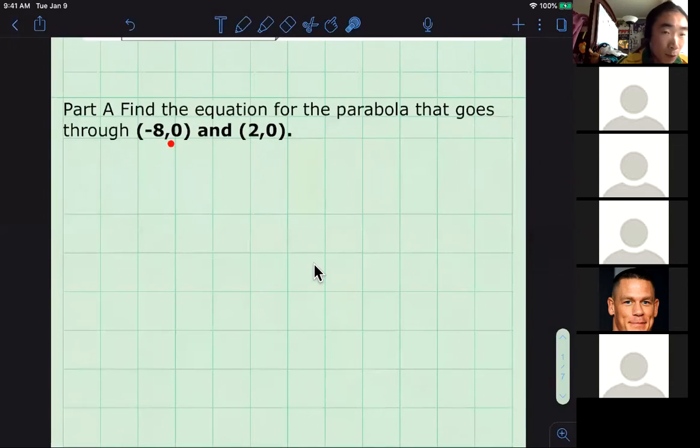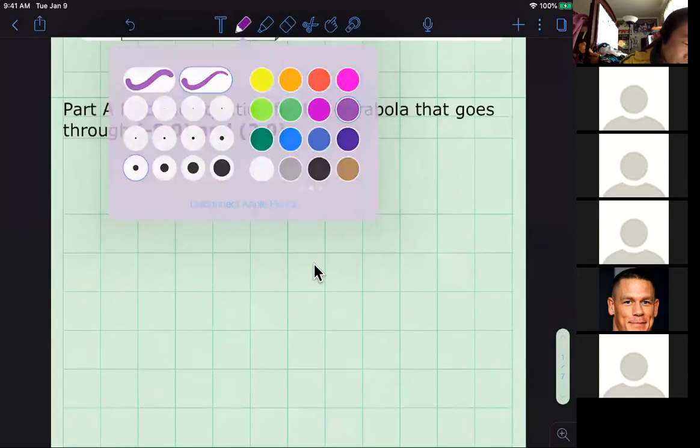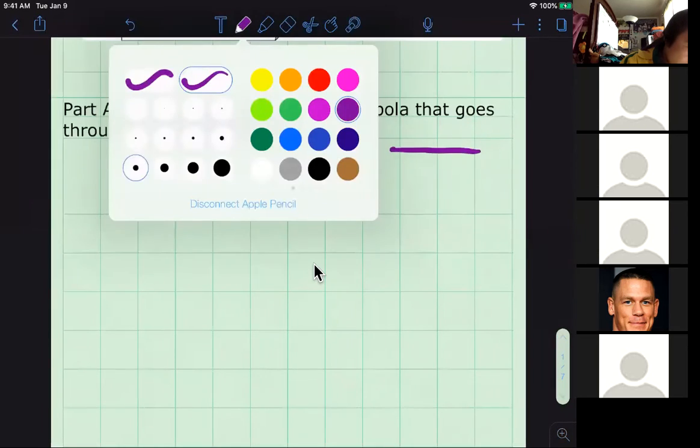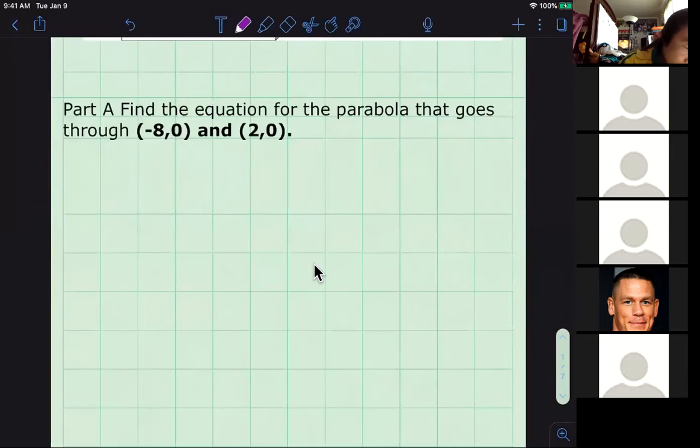Because both y coordinates are zero, these are, in fact, x-intercepts. If I were to draw a little sketch of the problem, it would look something like this. Negative eight's way over here, positive two is over here. And it could look like that.